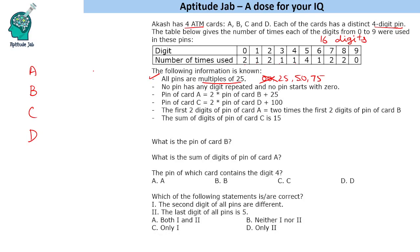Now let's look at the condition: PIN of card A = 2 × PIN of card B + 25. Consider the last two digits. If B ends in 25, then 25 × 2 = 50, and 50 + 25 = 75, so A ends in 75. If B ends in 50 — for example, 1350 × 2 = 2700, plus 25 gives 2725 — so A ends in 25. If B ends in 75, then 75 × 2 = 150, so last two digits give 50, then 50 + 25 = 75, so A ends in 75.